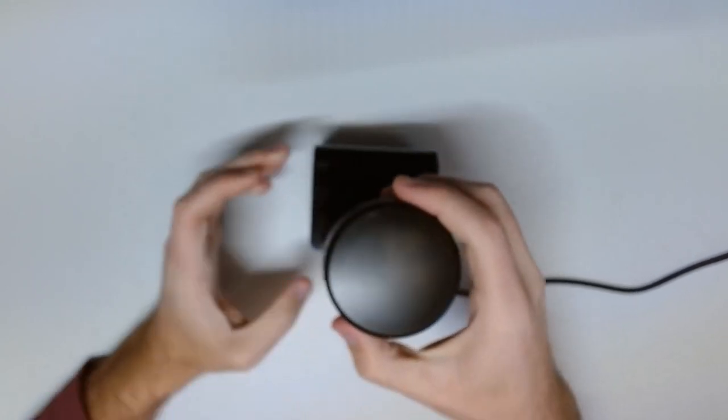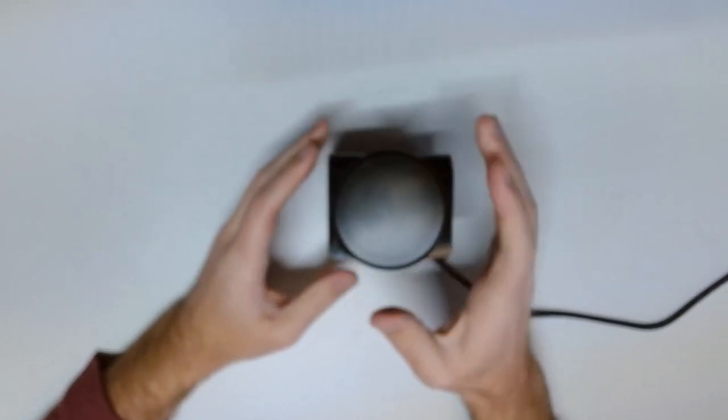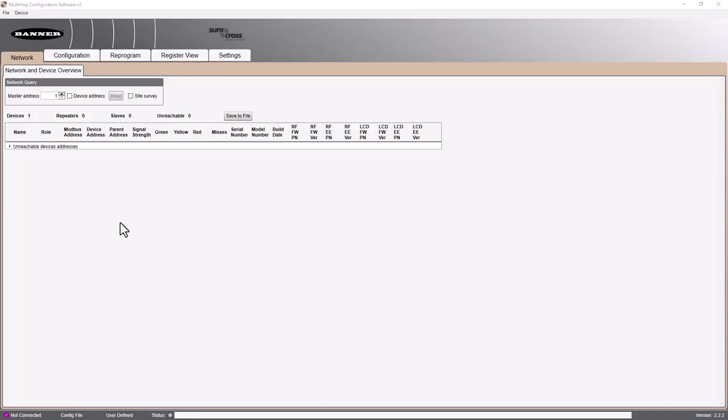Being that we're in multi-hop mode now, I'm going to transition over to a screen share of how we can do a site survey on these units using the multi-hop configuration software. Now we're going to look at doing that site survey through the client R70. I've got it plugged into the BWA UCT 900 cable, and I'm utilizing the multi-hop configuration software by Banner.